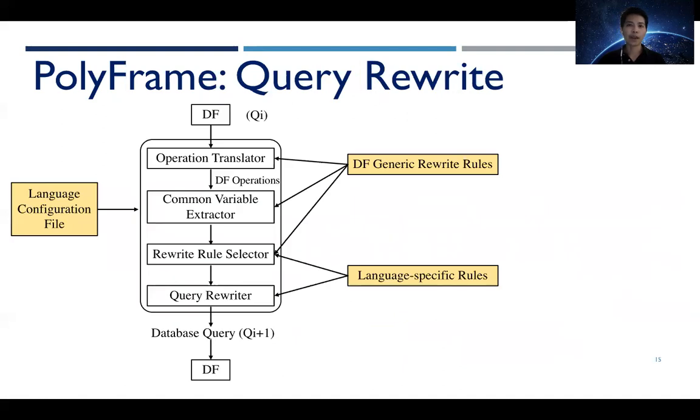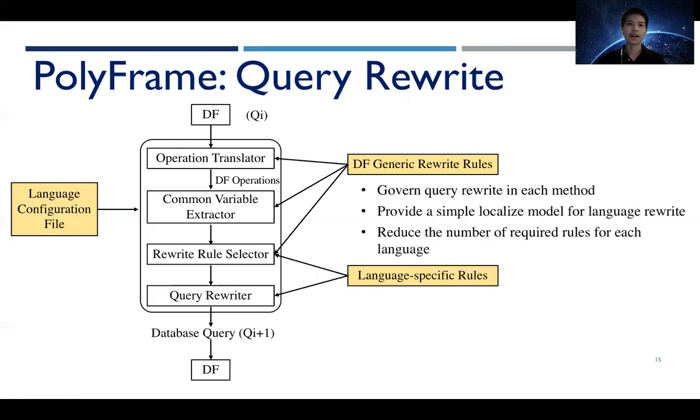We have established a query rewriting process. When a data transformation is performed to a PolyFrame object, the operation is translated into a sequence of DataFrame operations via our generic rewrite rules. Common variables will then be extracted. PolyFrame will apply language-specific rules to rewrite a query. The resulting query will become an underlying query of a new PolyFrame object. Generic rewrite rules identify a set of language-specific rules needed for each DataFrame operation. It also decomposes complex DataFrame operations into a sequence of steps. Each step is translated via our language-specific rule.